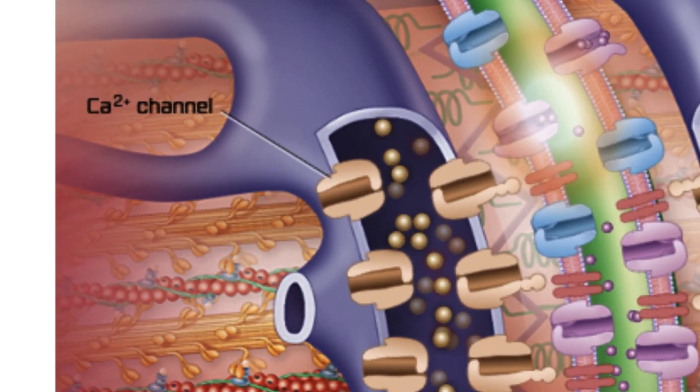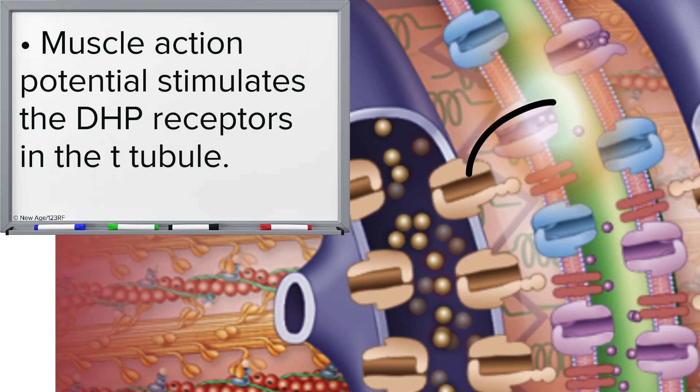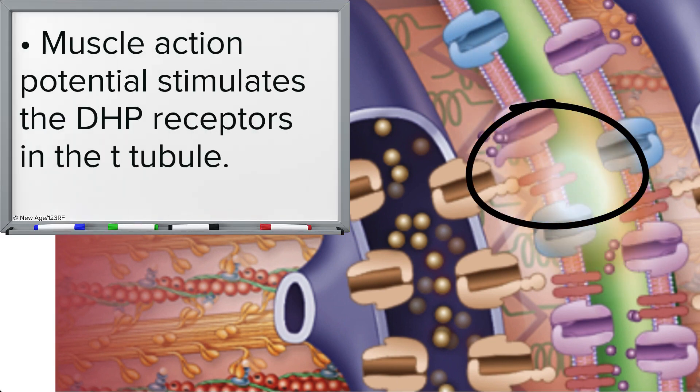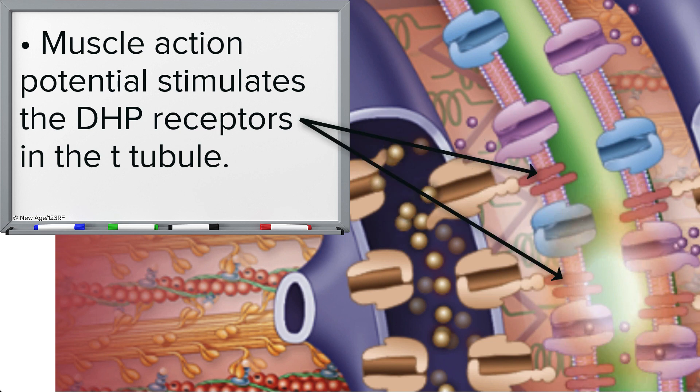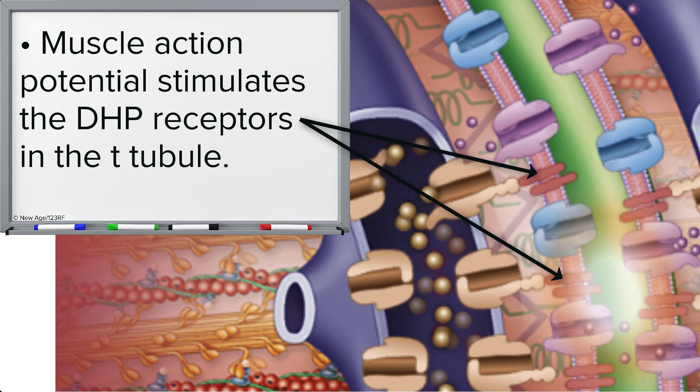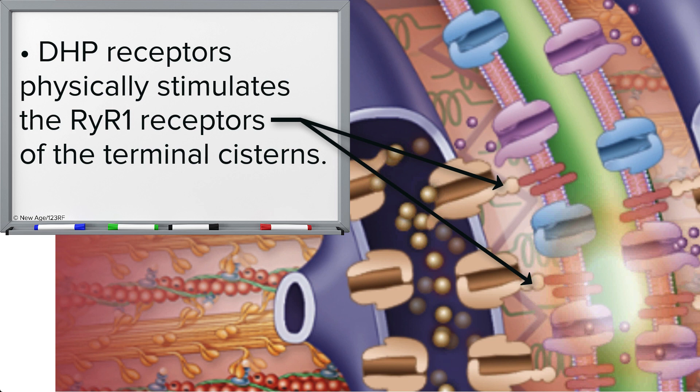In the T-tubule, the action potentials stimulate the voltage-sensitive dihydropyridine receptors, or DHP receptors. These receptors are physically linked to the ryanidine receptors, or RYR1 receptors, of the calcium ion channels in the membrane of the terminal cistern of the sarcoplasmic reticulum.